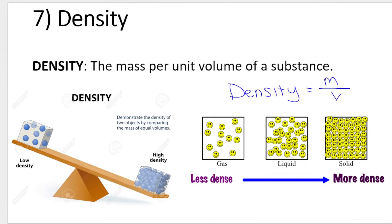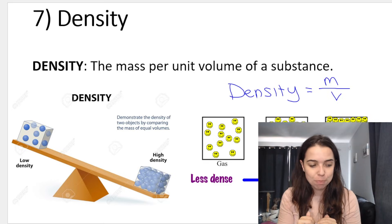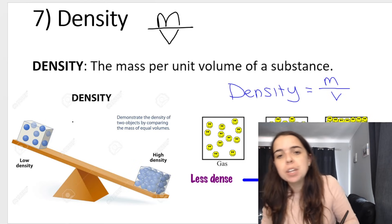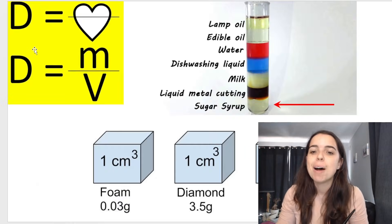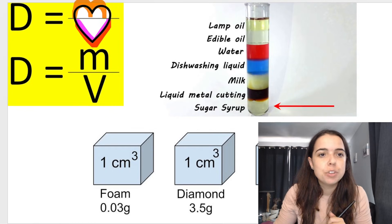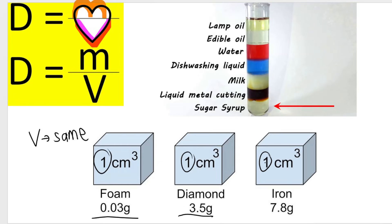Another property of materials is density — mass per unit volume. The word 'per' means divide, so we take mass and divide it by volume. If you ever forget how to calculate density, think about the formula: mass divided by volume. Looking at three different materials — foam, diamond, and iron — if we take one cubic centimeter of each, the volume is the same. The mass per cubic centimeter differs: iron has the greatest mass per unit volume, which means it has the greatest density.